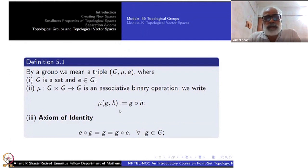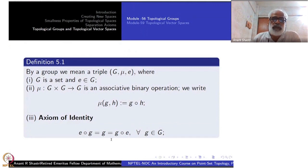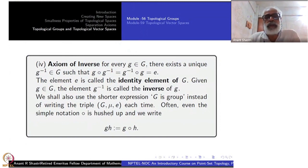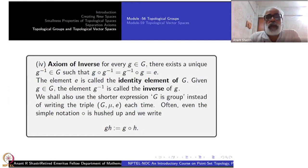The axiom of identity states that the distinguished element e is called the identity because e ∘ g = g and g ∘ e = g for every g in G — it acts identically on other elements, which is why it is called the identity. The element e is called the identity element.